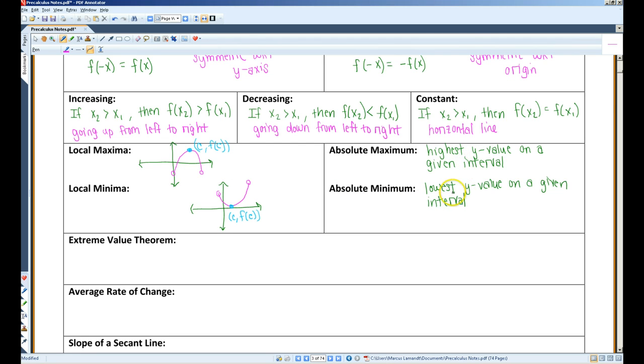An absolute maximum or an absolute minimum are the highest or lowest, or I'm sorry, the highest and lowest y values on a given interval, respectively. Sometimes the absolute maximum and the local maximum are the same, sometimes they're not.